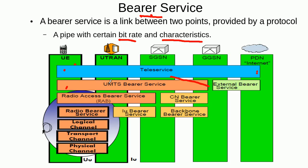We will now focus more on the Radio Access Bearer and the radio bearer service. It is important to concentrate on these because these pipes transfer data with certain QoS constraints over the air interface. As we know, on the air interface it is difficult — due to the particular nature of the wireless channel — to meet those QoS criteria. So it is important to study how the radio access bearer service and the radio bearer service manage that quality of service.